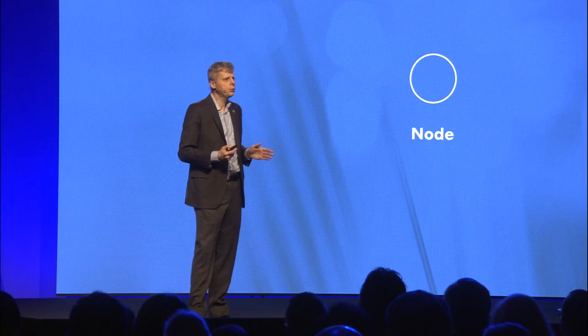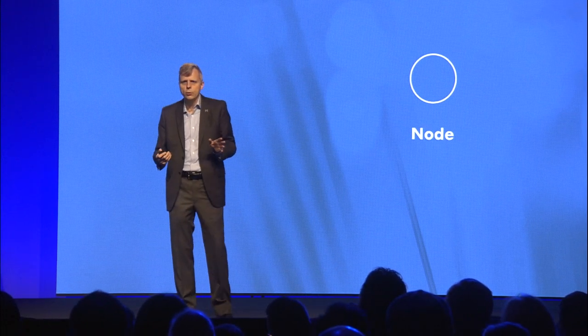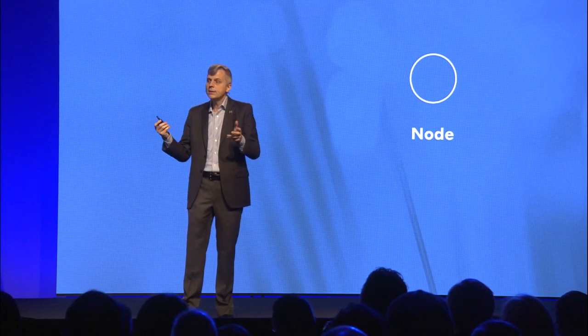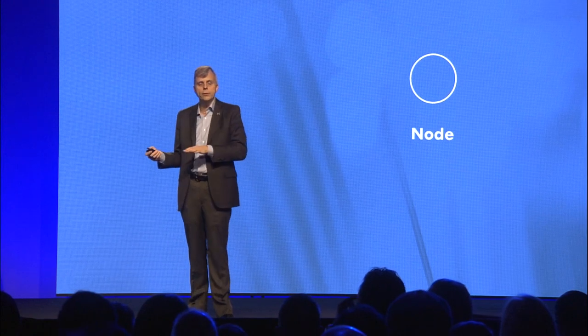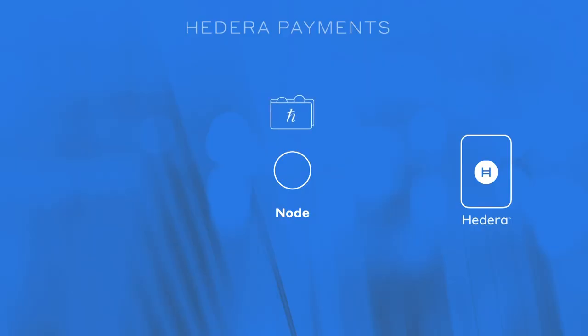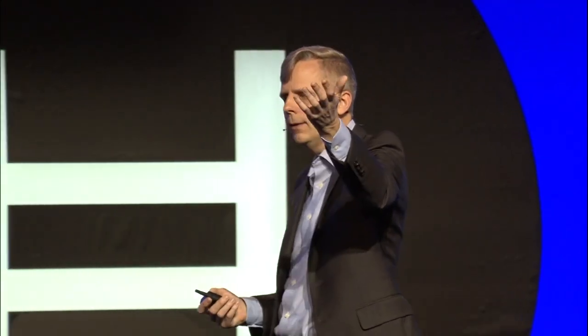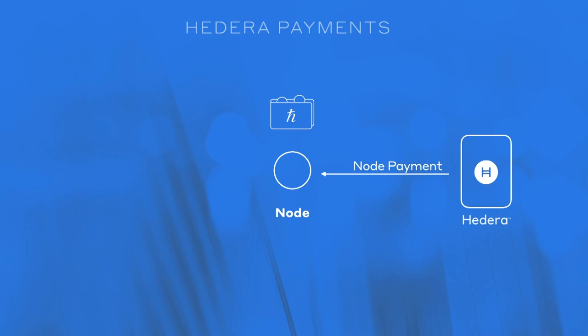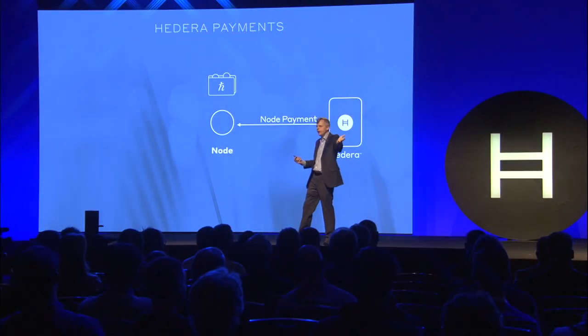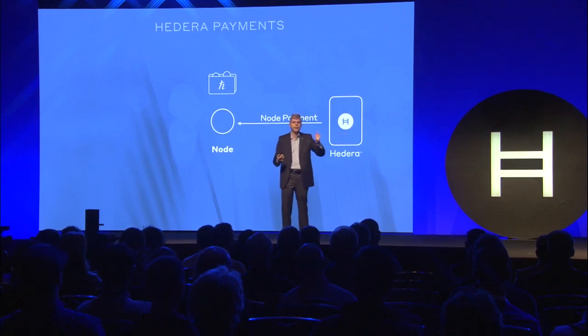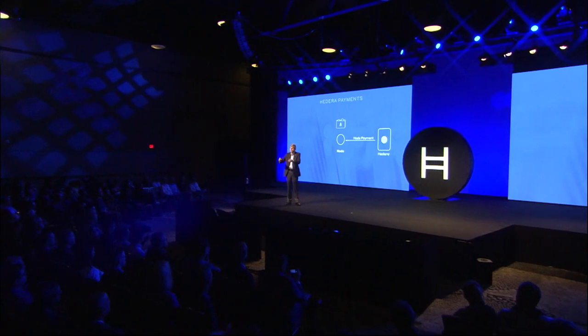This is not a proof of work system where you have to have a supercomputer and use more electricity than the nation of Ireland. This is a proof of stake system. Proof of stake means that whoever is running the node has an account with HBARs in it — they have the cryptocurrency. And they say, I am staking this cryptocurrency as I am running this node. Then once a day, we're going to pay you for being a node — thank you for helping us out for this day if you were running all day. We pay you proportional to how many coins you were staking. The consensus algorithm weights all of these votes proportional to how much you were staking, so your stake represents how much you're helping us come to consensus. The bigger your stake, the more you helped get to consensus. This node payment is proportional to it.